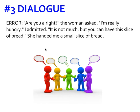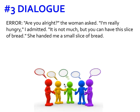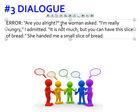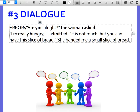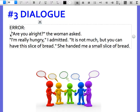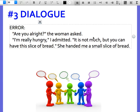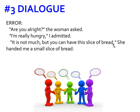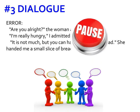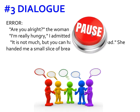Now I need to make sure that every time there's a new speaker, I add a new paragraph. The woman speaks first: 'Are you all right, the woman asked.' Then I respond — 'I'm really hungry, I admitted' — that's a new paragraph. Then the woman speaks again — new paragraph. When 'she handed me a small slice of bread,' she's not speaking, so that stays in the same paragraph. Pause the video now and go look at your dialogue to fix any errors — whether that's putting punctuation inside the quotation mark or creating a new paragraph for each new speaker.